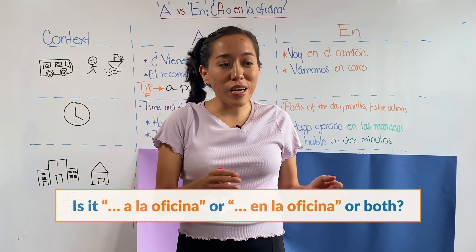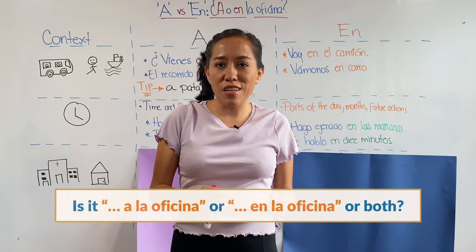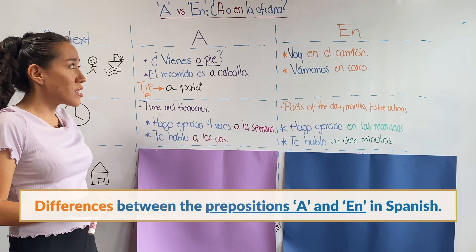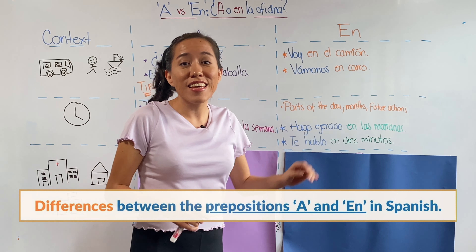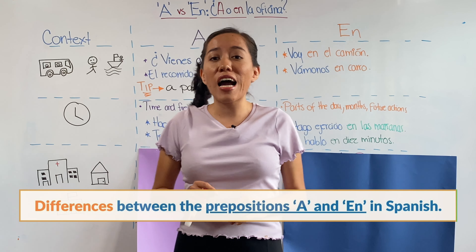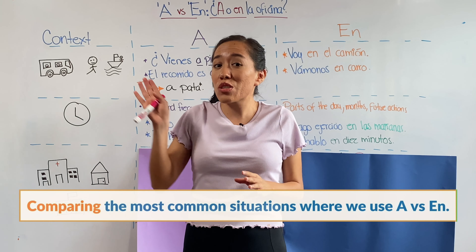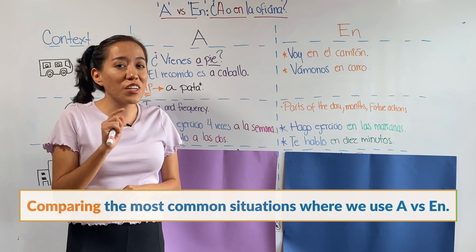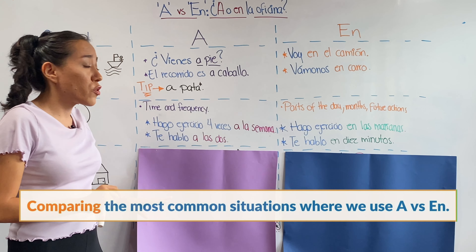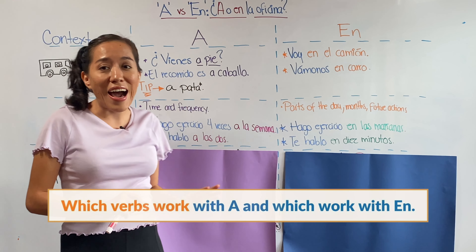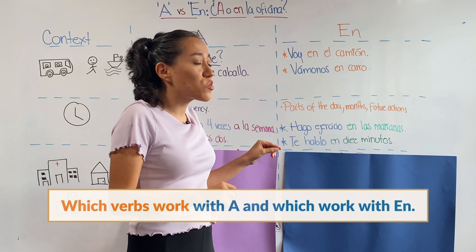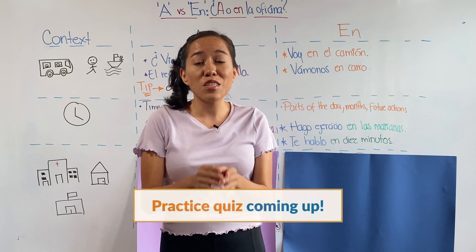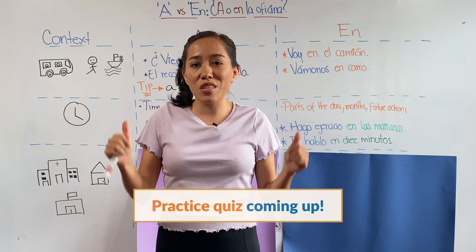Is it a la oficina or en la oficina, or is it both? In this video we're going to talk about the differences between a and en, and to do it I'm going to show you the most common situations when you are going to apply these prepositions. Later I'm going to show you what verbs you can use with a and what verbs you can use with en. And to finish we're going to do a quiz so you can practice your knowledge on this topic.